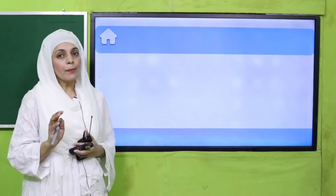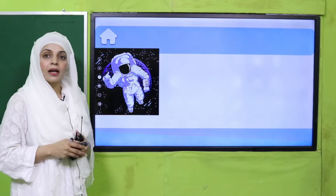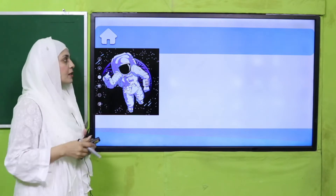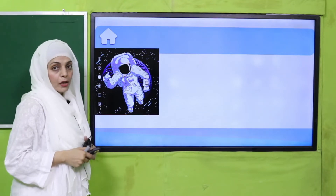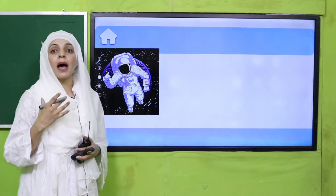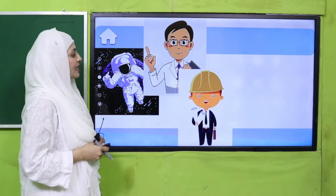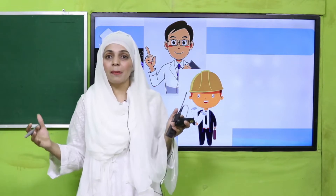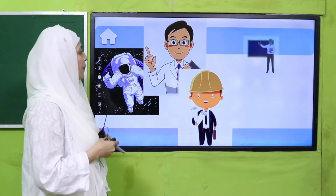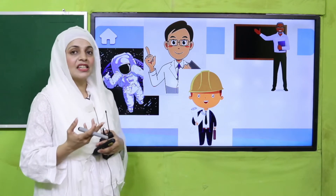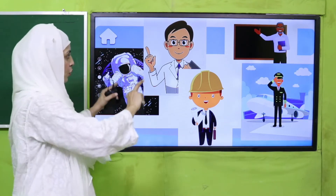Let's start with an activity. Mein ab aapko kuch pictures dikhaungi, aapne in pictures ko one by one bohut ghor se dekhna hai. Sab se pehle: a person wearing a space suit is in space — who is he? He is an astronaut. Jo bhi shaks space mein ja kar kaam karta hai usko hum astronaut kehte hain. Next: a person with a cap, maps in hand, going to construct a building — he is an engineer. A person teaching at a whiteboard — he is a teacher. A person who flies a plane — he is a pilot.